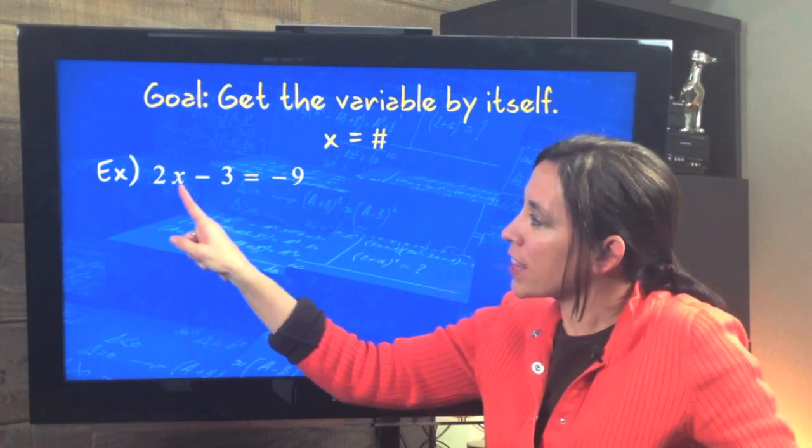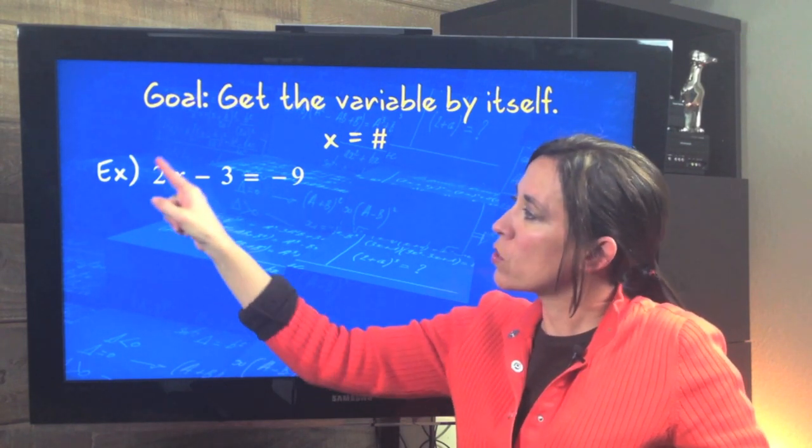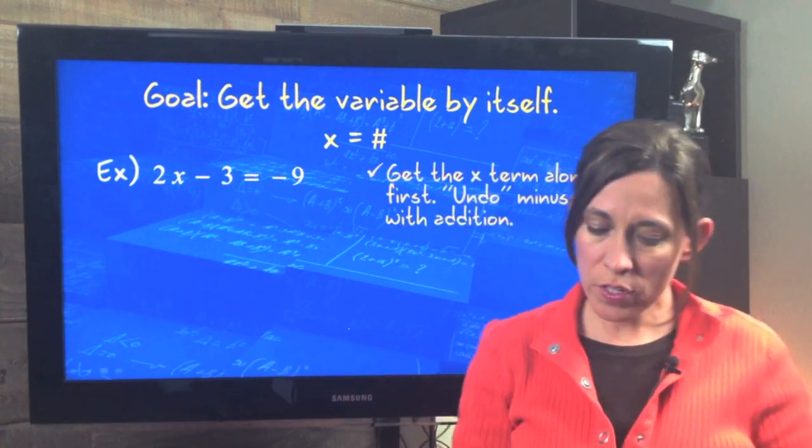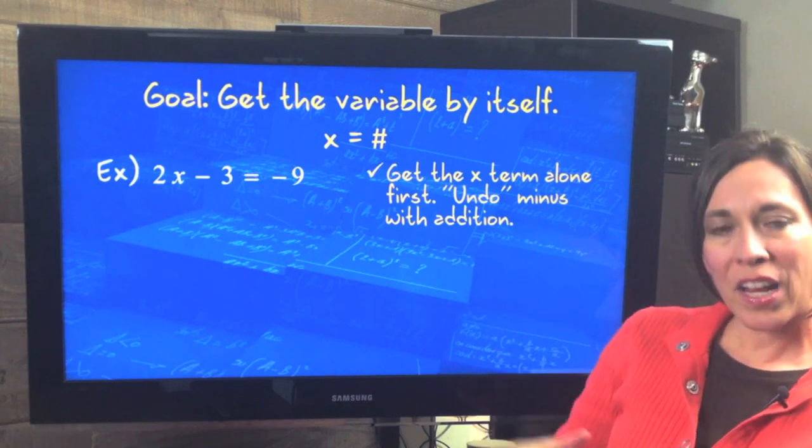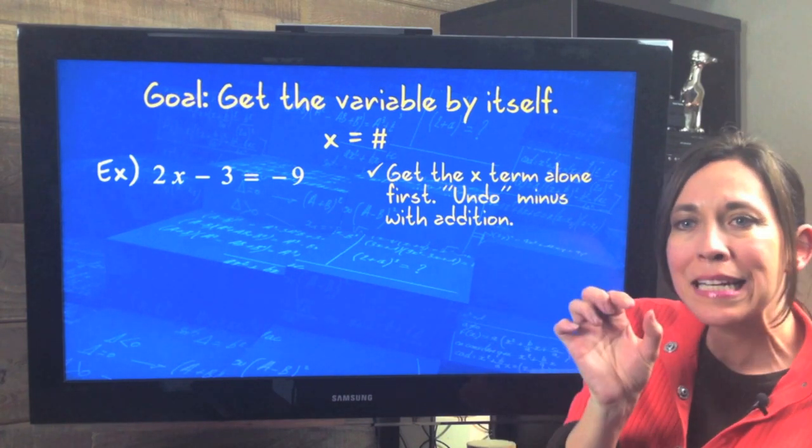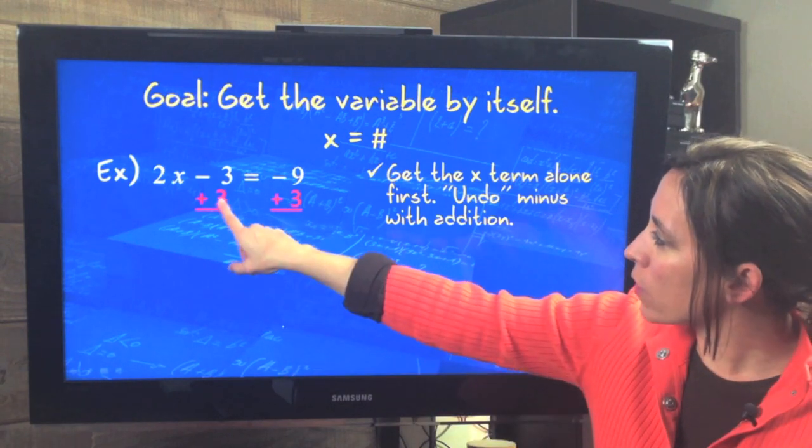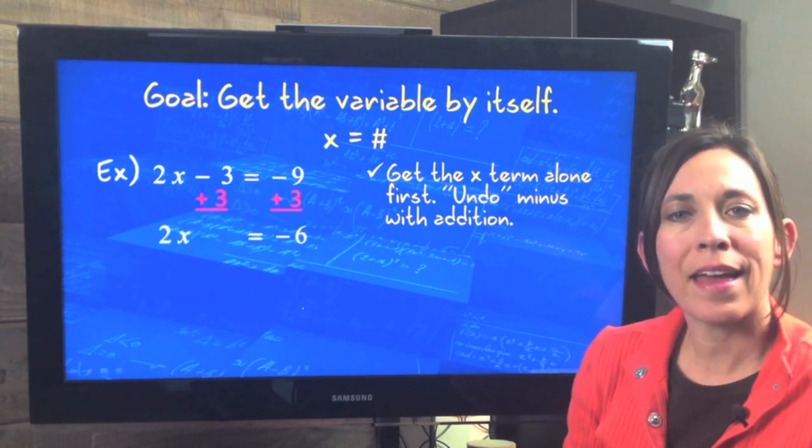So right here we find the x. It's on the left hand side. Now here's a 2 attached to it. So you've got an x term, but here we have a constant. So the first thing we want to do is to get the x term alone. So we're going to undo that subtraction, that little minus sign, by adding the 3 to both sides. So we add 3 here. There's your equal sign. Add a 3 there. We get 2x equals negative 6.